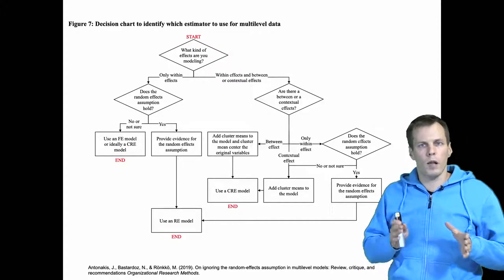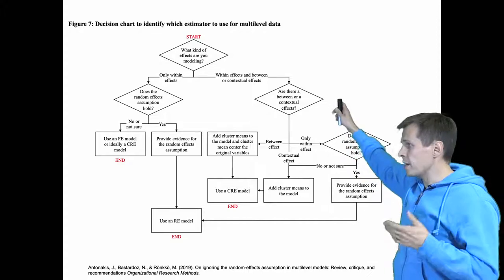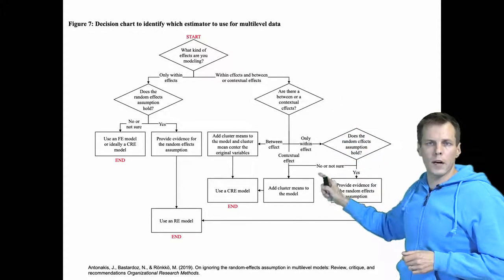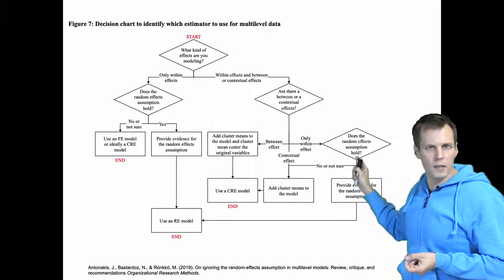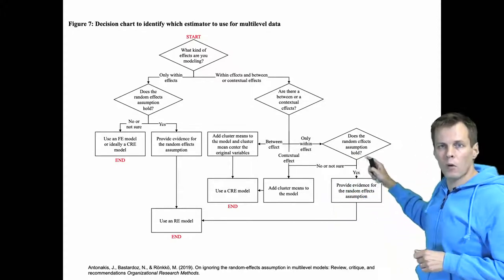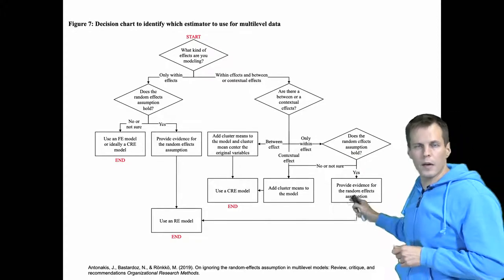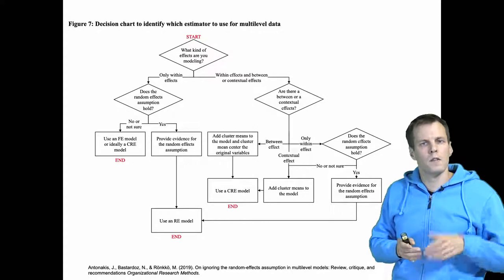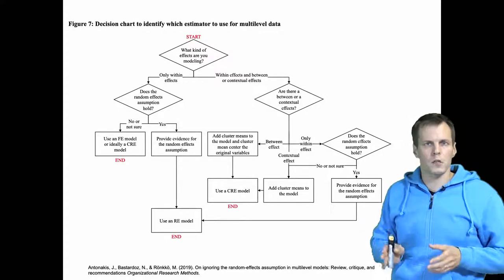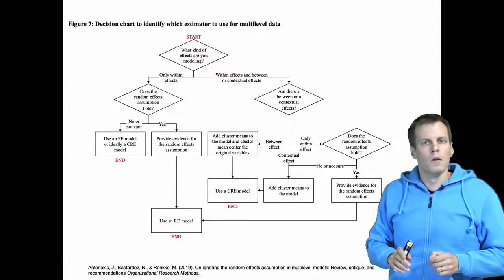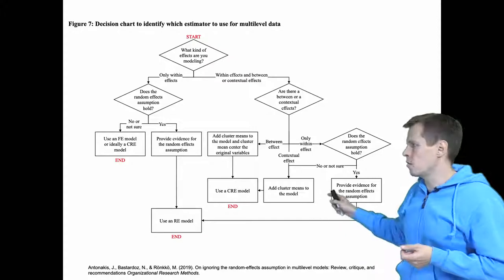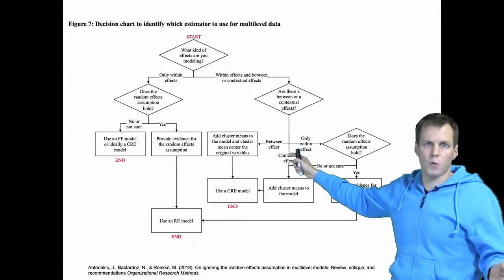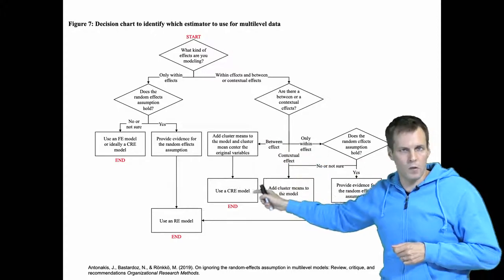If you are interested in effects on multiple levels, you need to decide for each variable what kind of effects you want to know. If you only want to study within effects for a particular variable, you must test the random effect assumption for that variable. If it holds, provide evidence and apply a random effects model. If there are contextual or between effects of interest, you must decide which one you want to study. The contextual effect is probably more commonly of interest, and if you study it, you add cluster means to the model. If you want the between effect, you cluster mean center the original variables and then add the cluster means, applying a CRE model.